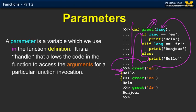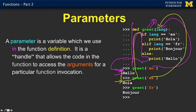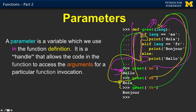It goes on to the next statement — greet again. It runs the function, and this time lang is 'es', so that condition is true. We run that code and print out hola, then go back. Then we call greet with 'fr' — lang is 'fr', the first condition is false, the second is true, so it prints out bonjour. You see the whole pattern there — the function gets run a couple of times.